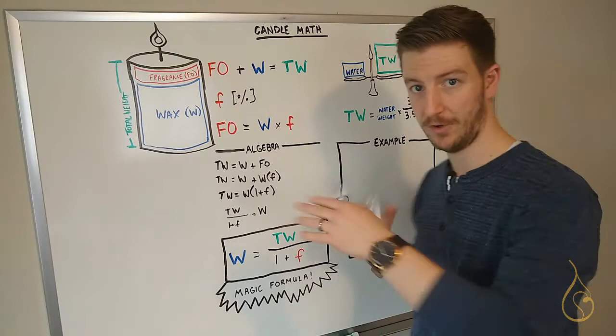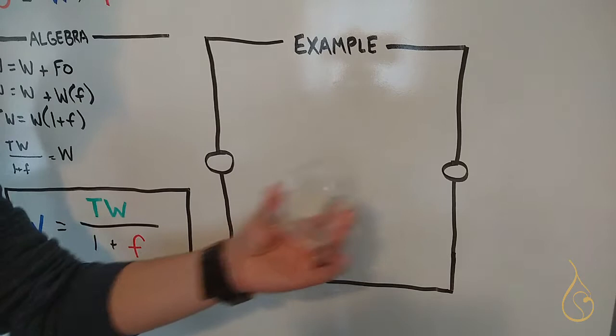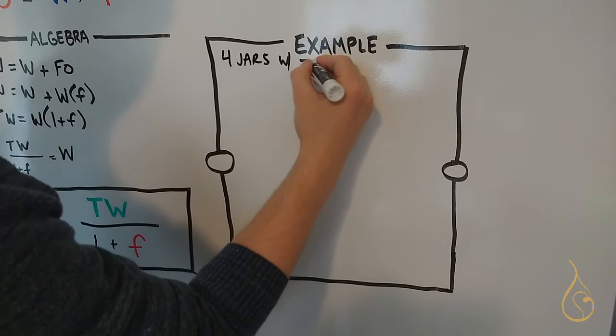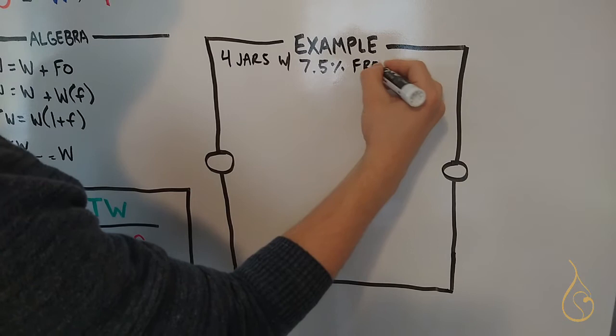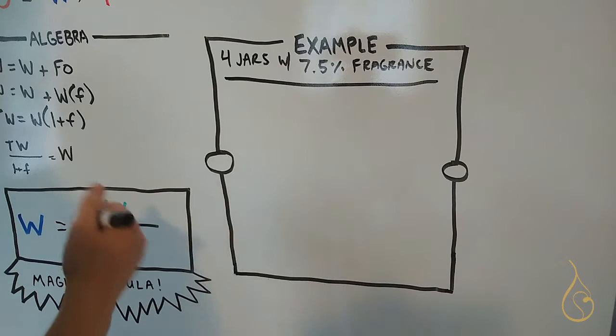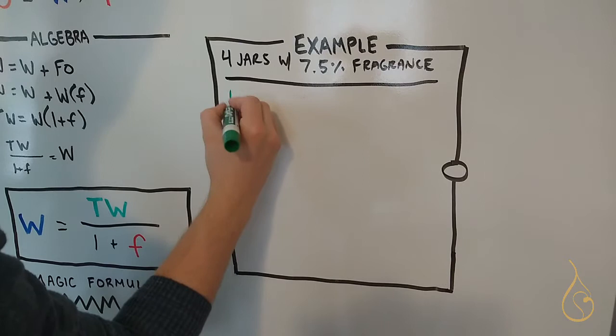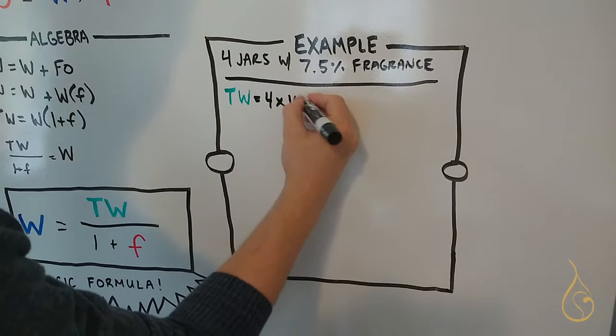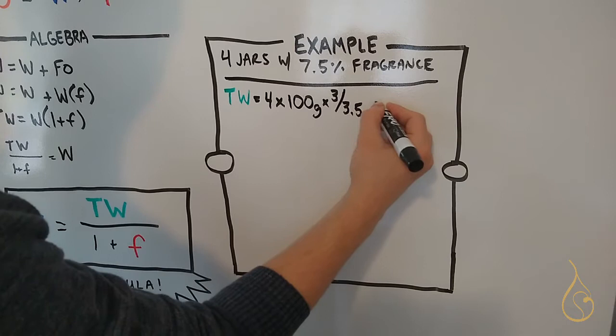All right, so in our example, we'll go ahead and use this small little jar here. And let's say we're going to make four of them. So four jars with 7.5% fragrance. Literally just made those numbers up. What we can expect is, first, let's kind of figure out what our variables are. Like I said, I know that that container weighs 100 grams. So the first thing we're going to want to find out is our total weight, so TW. We have four jars, so we're going to say equals four times, and remember the water weight was 100 grams for that container, times 3 divided by 3.5. This equals 344 grams.